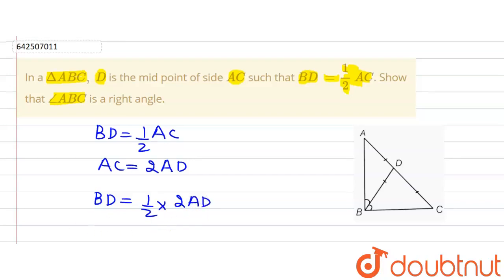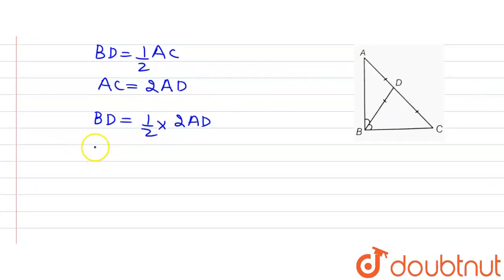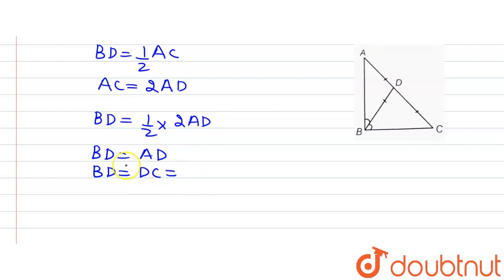This gives us BD is equal to AD. Since D is the midpoint, AD is also equal to DC. So we can write BD equals DC. That means all three segments AD, BD, and DC are equal to each other.